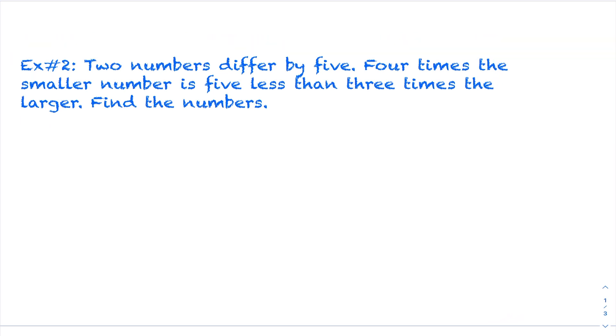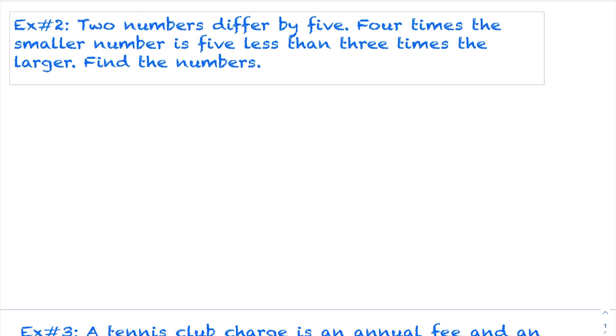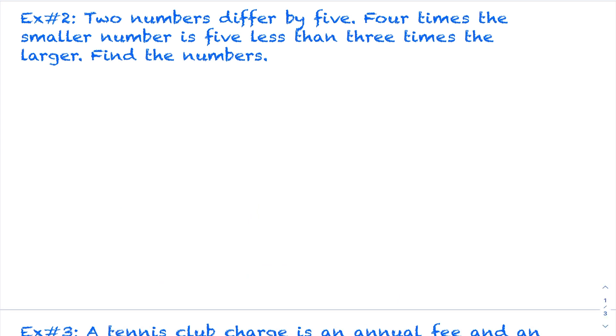So for the next example here. We have two numbers. Two numbers differ by 5. Now, it says here that 4 times the smaller number is 5 less than 3 times the larger number. Find the numbers. So right away, what they ask you to find gives me the variables I have to introduce. So I'm going to let s equal the smaller number and let l equal the larger number. Again, you always go to that last sentence. That last sentence will tell you what variables to introduce. Now that I have my variables, I know I need two equations.